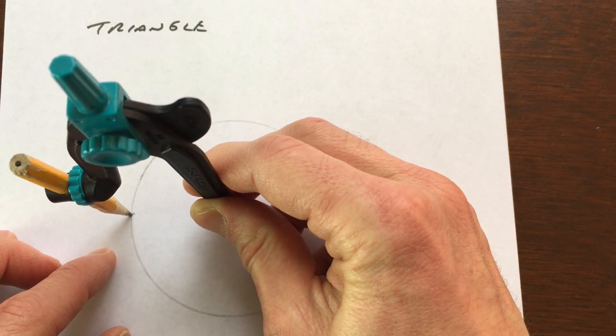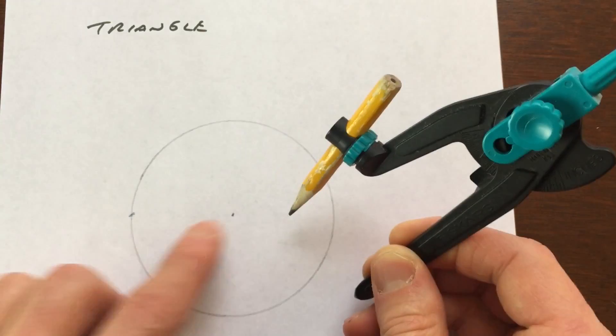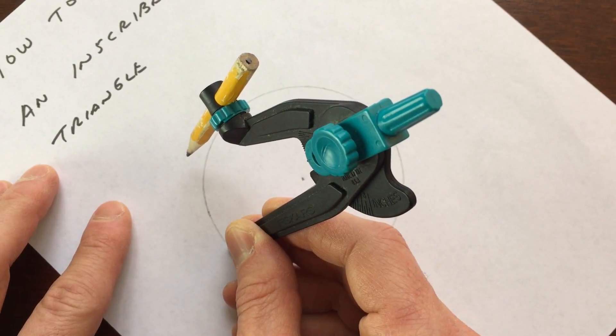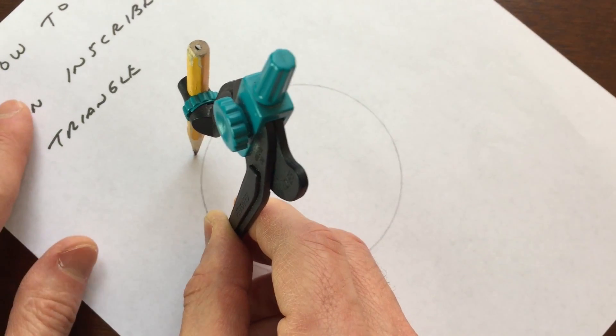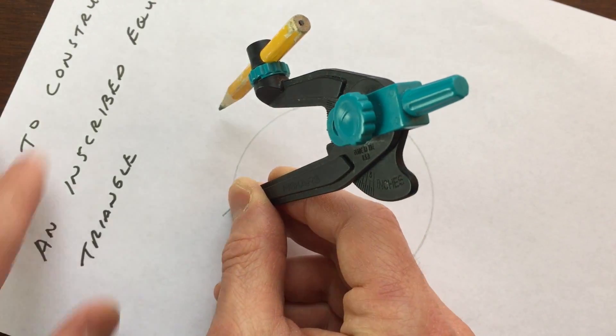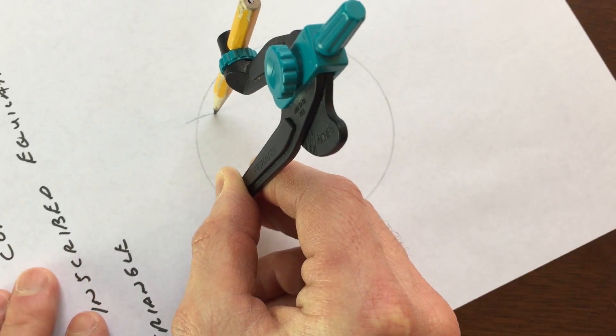Now that we have the compass open such that it measures the distance from the center to a point on the circle, we're going to go around the circle drawing arcs. There's our first arc. We're then going to go to the next point and draw another arc and work our way around the circle.